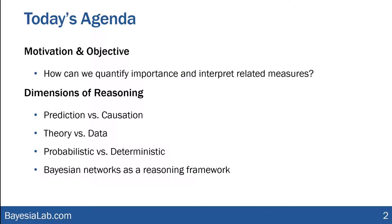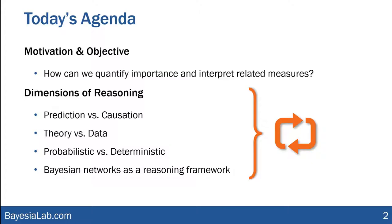Before we can do that, we really need to talk about dimensions of reasoning. For those of you who have watched previous webinars or attended seminars, this is something we've talked about a lot. In this context we'll distinguish between prediction and causation, theory versus data, probabilistic versus deterministic models, and we will propose Bayesian networks as our principal reasoning framework.